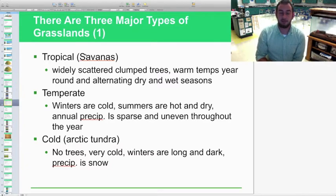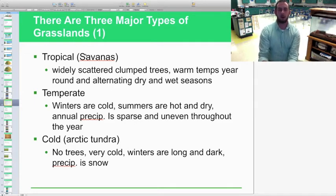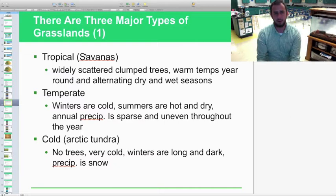There are also three major types of grasslands. The first one is the tropical grasslands, aka the savannas. They have very widely scattered clumps of trees, warm temperatures year-round with some alternative dry and wet seasons, sometimes called a monsoon season. It's mostly seen out in Africa, aka the Lion King habitat. Temperate are your winters are cold, summers are hot and dry, precipitation is kind of sparse and uneven throughout the year. Cold and arctic, this is the arctic tundra, which is known as a grassland. No trees, very cold, winters are long, dark, precipitation is not in a liquid form but in a solid form, aka snow.